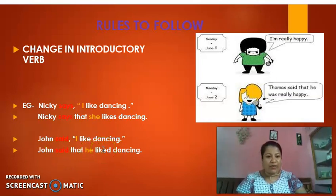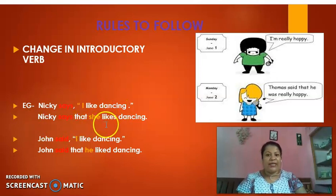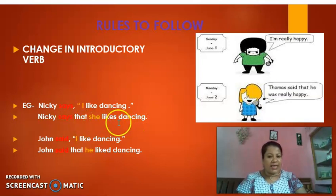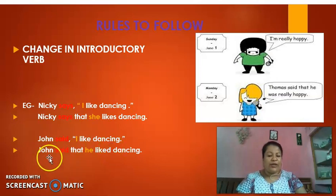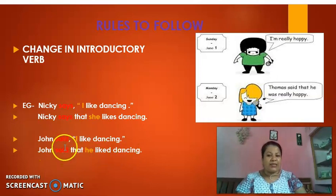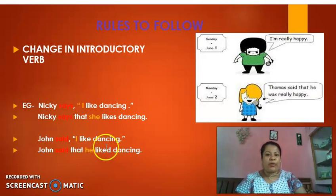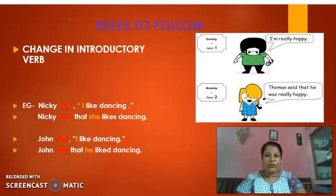Nikki says, 'I like dancing.' This is a sentence in the present tense. Nikki says that she likes dancing — again, it's in the present tense. John said, 'I like dancing.' But over here you can say, John said that he liked dancing. So remember when 'said' is in your past tense, automatically this verb also changes to the past tense. So that is your introductory verb. Now let's look at the next rule.